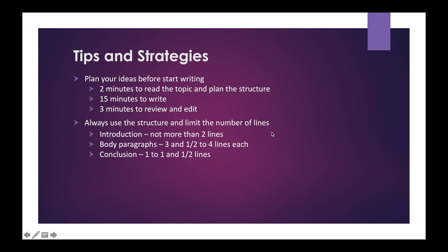Always use the structure and limit the number of lines: 2 body paragraphs and a conclusion will give you around 230 to 260 words, which is more than enough. When you complete the first body paragraph, you will sometimes be reaching around 180 to 200 words already, so limit the number of lines per paragraph. Introduction: not more than 2 lines. Body paragraphs: 3.5 to 4 lines each. Conclusion: 1 to 1.5 lines. This will bring you around 270 words. In each line in the PTE test text box you can write around 25 to 30 words, so for 10 lines you can easily get around 260 to 270 words. Don't write too many points in body paragraph 1 because you need to balance with paragraph 2. If you reach up to 4 sentences in the first paragraph, complete the sentence and start writing the next paragraph.